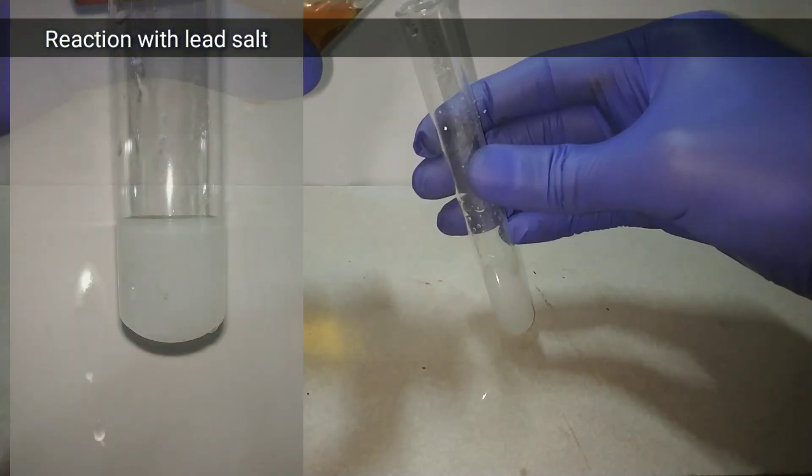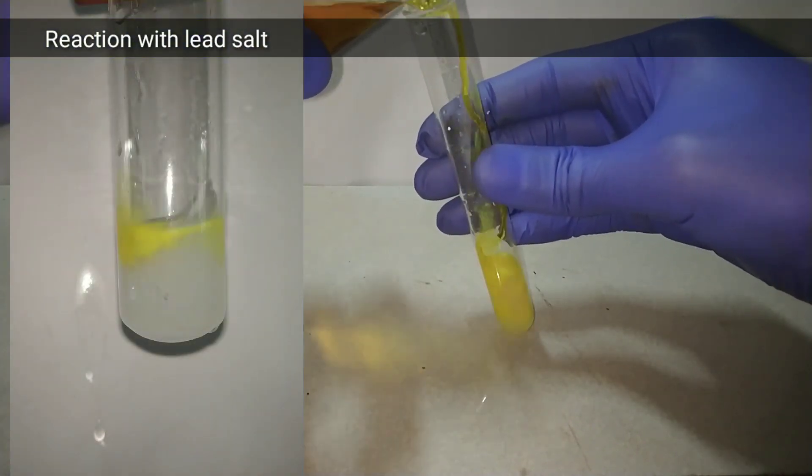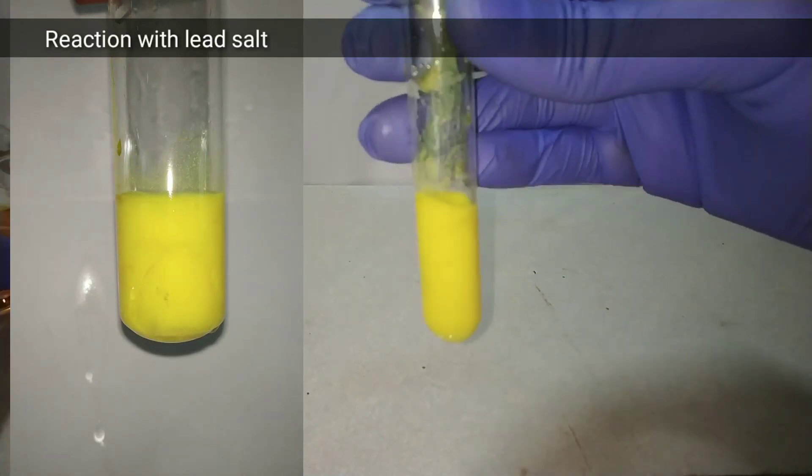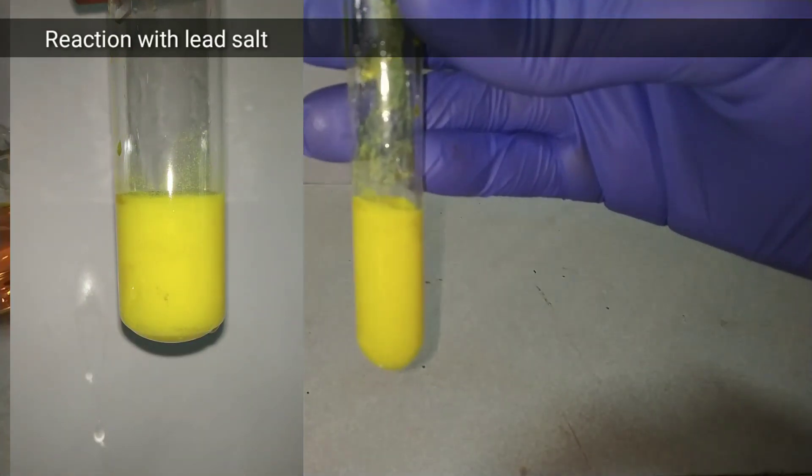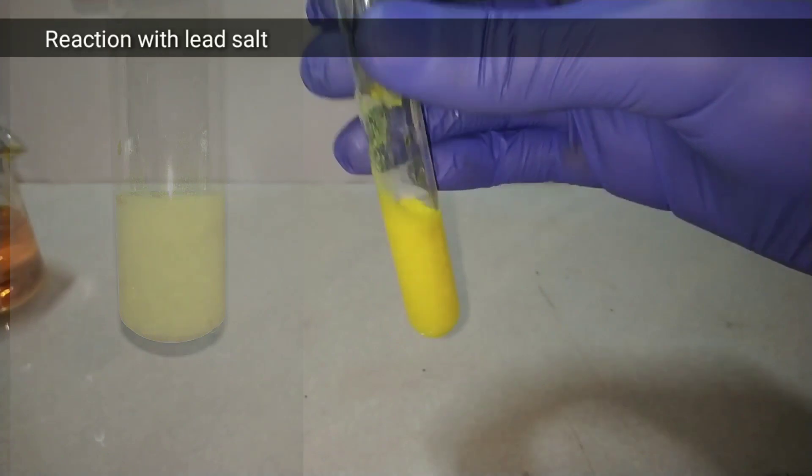Now let us see some precipitation reaction with lead salt. With lead salt it gives a yellow precipitate of lead chromate and this is used in the qualitative analysis of lead ions.